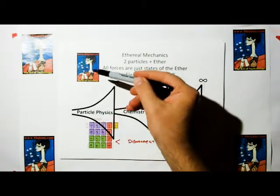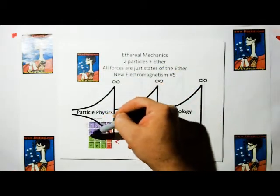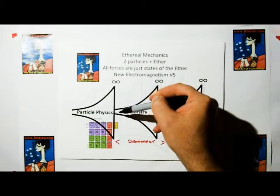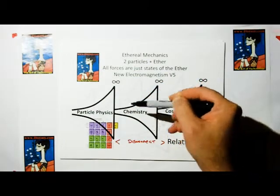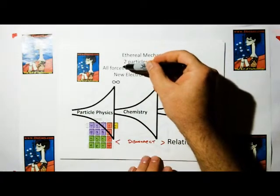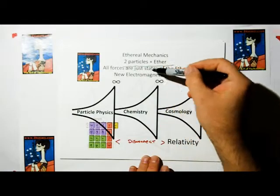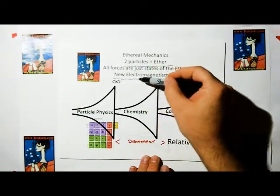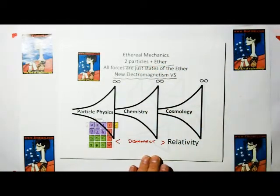Ethereal mechanics is going to be the, we're going to derive all these particles plus the proton, electron, neutron, and higher heavier elements from ethereal mechanics. This is going to be derived just from two particles plus ether, where all forces are just states of ether. That's going to be new electromagnetism version 5. The reason why we're doing that, and another reason why I do not have faith in quantum mechanics, because quantum mechanics does not describe gravity. There is no consideration of gravity. Therefore, it cannot possibly be a theory of everything until it describes gravity.